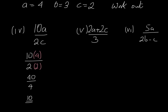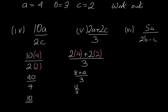Part 5: 2A plus 2C all divided by 3. So that's 2 and A is 4, so 2 brackets 4 plus 2 brackets C which is 2, all divided by 3. Now we work out the top of this fraction. 2 multiplied by 4 is 8, plus 2 multiplied by 2 is 4. So that's 8 plus 4 divided by 3, and 8 plus 4 is 12, divided by 3, and 12 divided by 3 is clearly 4.